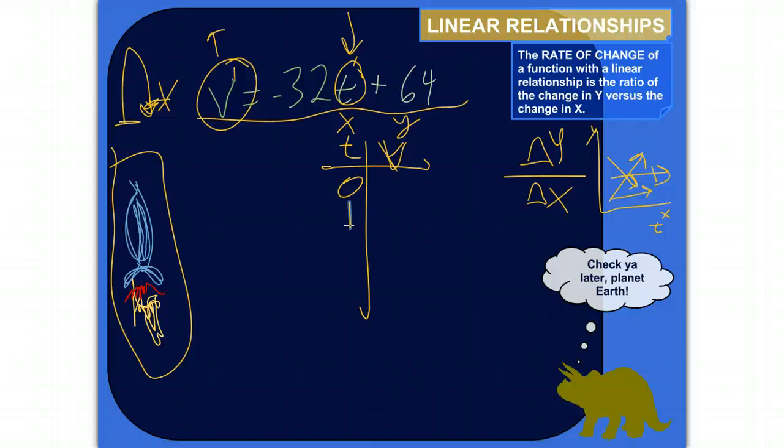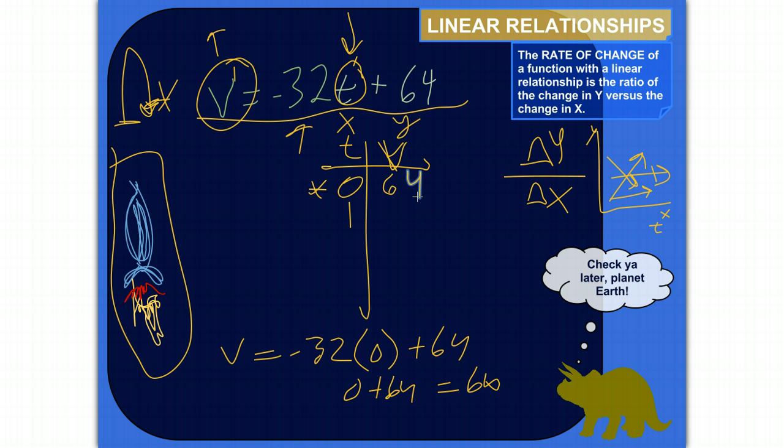Okay, so let's plug in each of those values into this equation. So in the first case, we've got the velocity of the rocket is equal to negative 32 times t, in this case t is 0, plus 64. And so negative 32 times 0 is 0, plus 64 is equal to 64. So v is equal to 64 when time is 0.